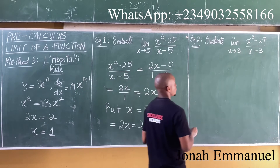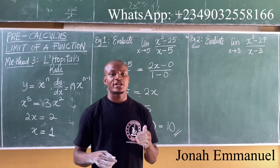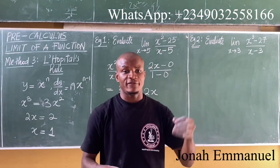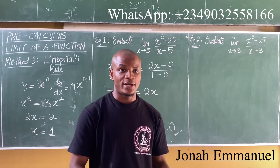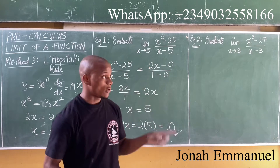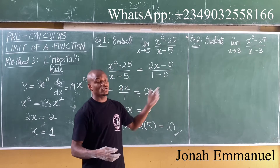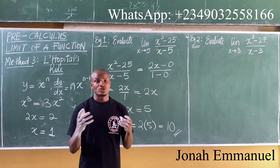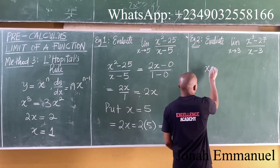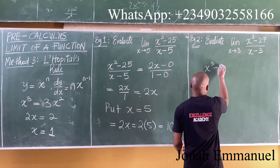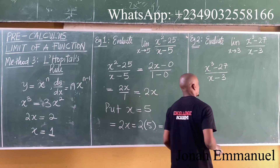Let's move on to the second question. Using the same concept of L'Hôpital's Rule, we differentiate each of the terms individually and then substitute the given limit value. The given function here is (x cubed minus 27) all over (x minus 3).